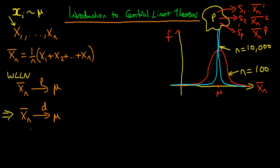Convergence in distribution to a constant μ means that essentially at n = ∞, I just get a straight line at μ — that's the purple line indicated here. That means that in each of my samples, if I calculate the sample mean, I will always get the population mean μ. In a sense, convergence in distribution to a constant means that a variable has no real sampling distribution — it's just a straight line, so it doesn't really mean anything to talk about it as having a distribution.